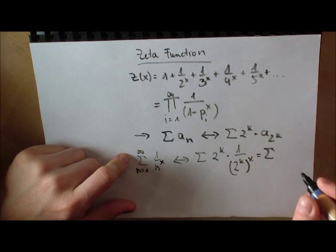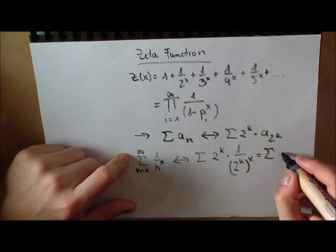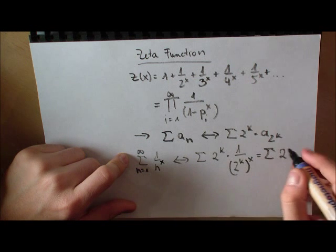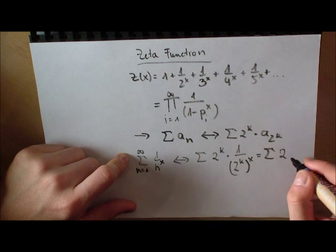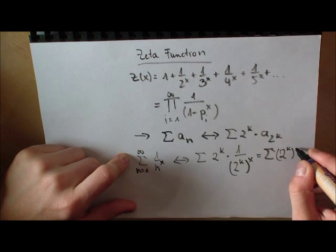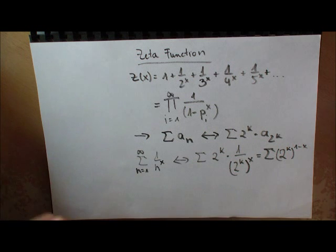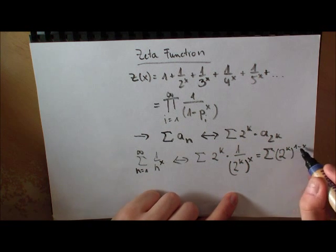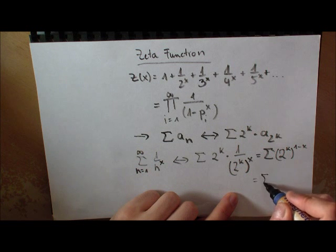We get this sum, let me write this down. So we have 2 to the k multiplied by 1 over 2 to the kx, which equals 2 to the k times 1 minus x. I'm interchanging these powers and I will get this.